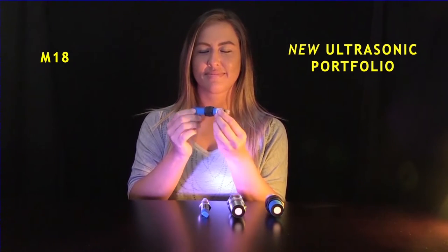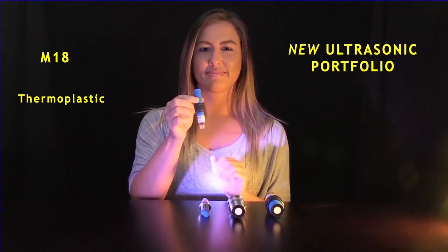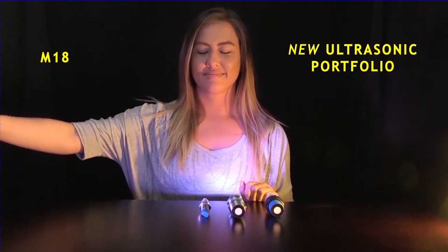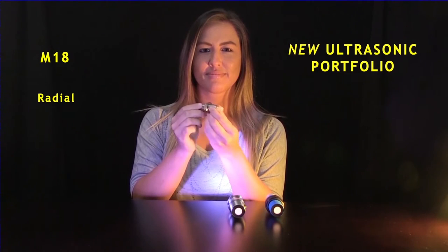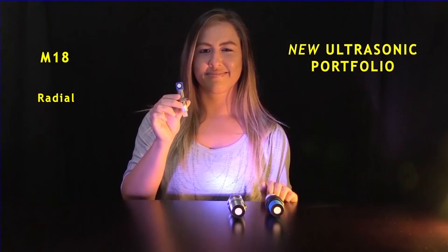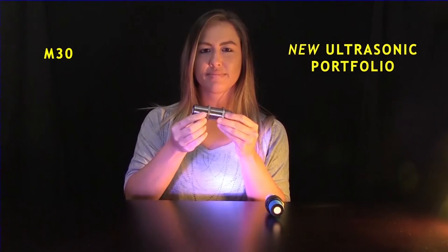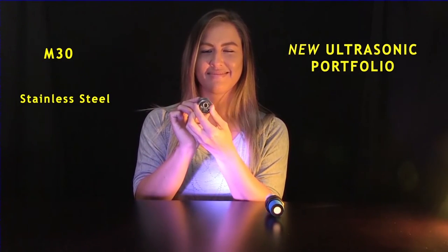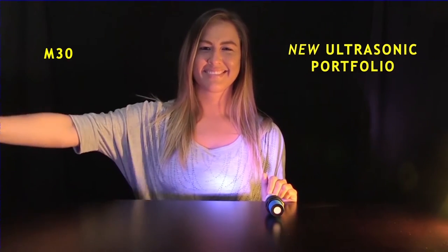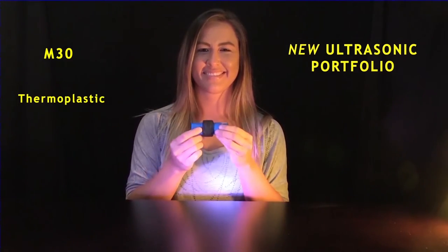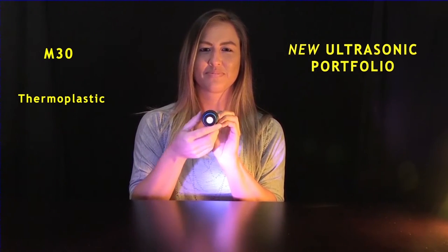Here is an M18 thermoplastic body with an M12 connector. This M18 in stainless steel has a radial side firing sensor. For longer range we have the M30 stainless steel with an M12 connector, and the M30 in thermoplastic with the M12 connector.